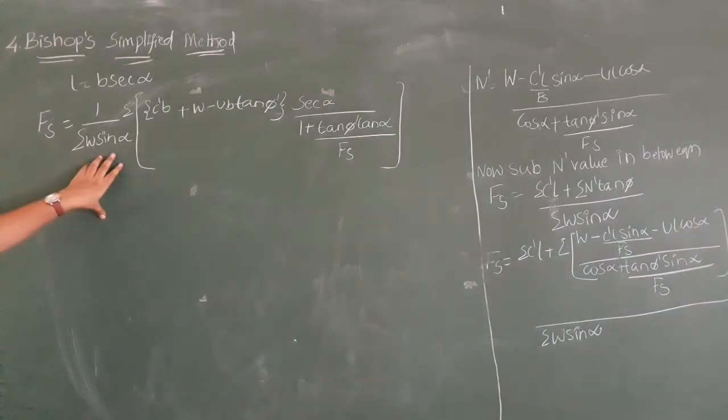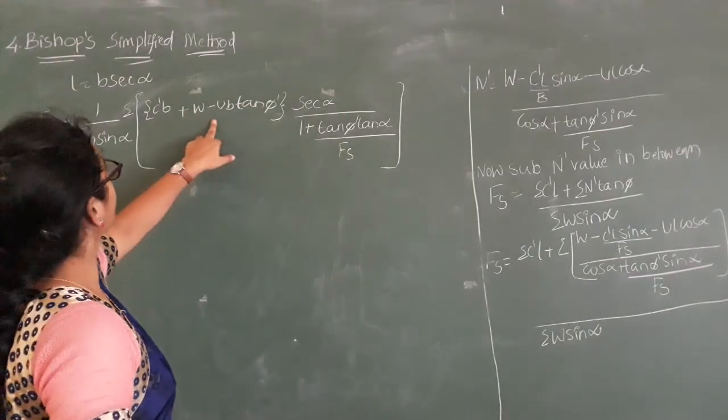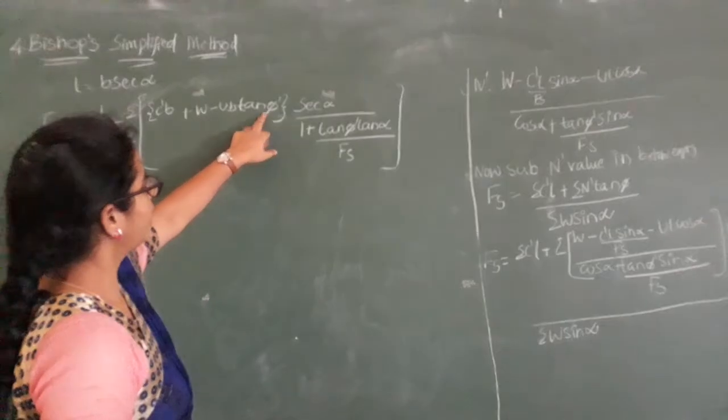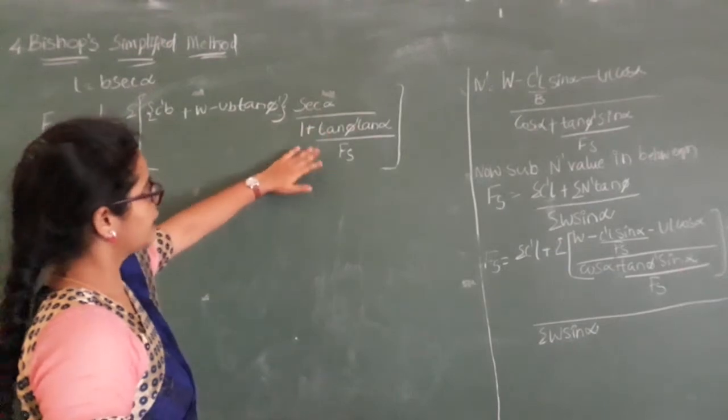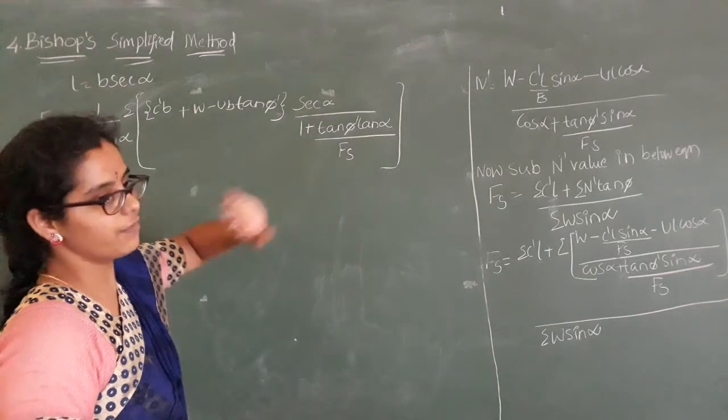1 by summation of W sin alpha into summation of C dash B plus W minus U B tan phi secant alpha by 1 plus tan phi phi by tan alpha into tan alpha by Fs.